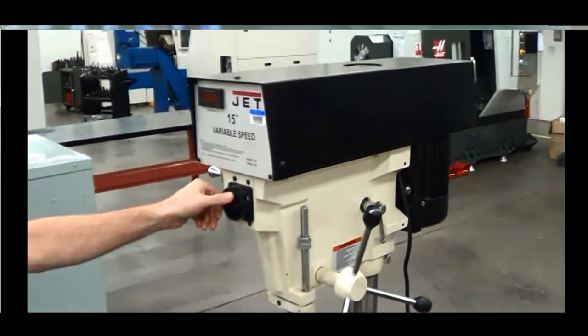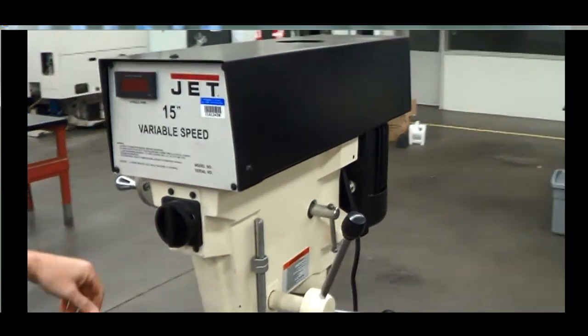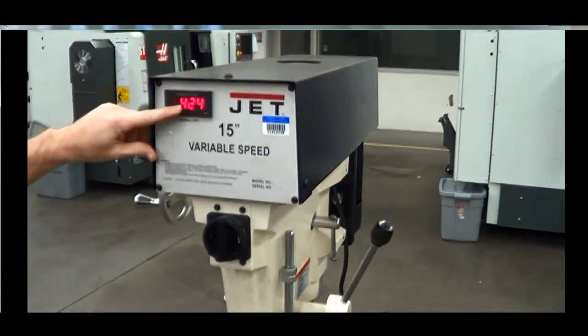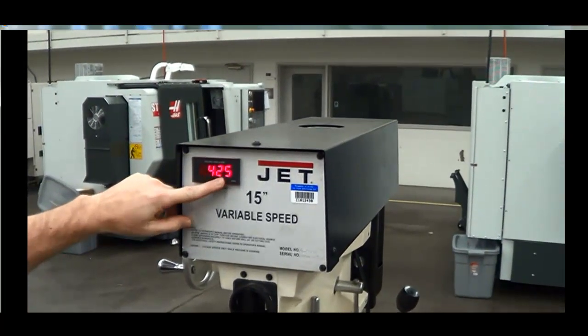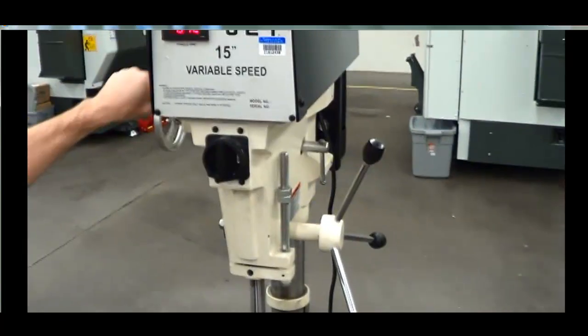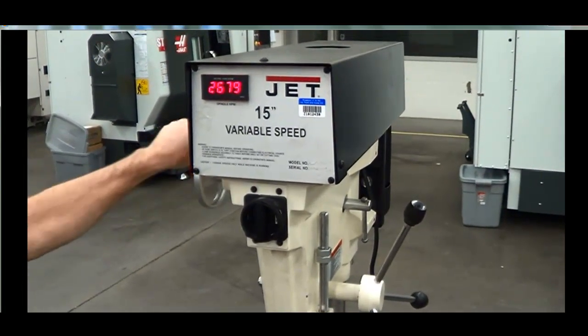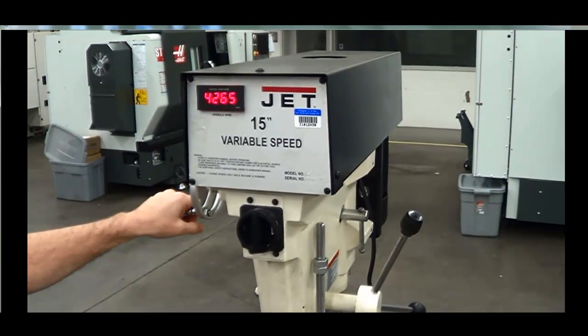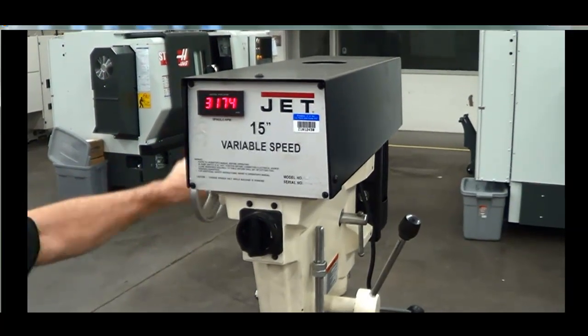Alright, we can cut the spindle on here. Our spindle speed is indicated right here in RPM, revolutions per minute. We can speed that up with our variable speed handle here. Slow it down of course.